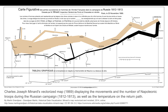Here's a very famous image that displays the movements and the number of troops that Napoleon had as he began his disastrous Russian campaign. This is a pretty interesting plot, and I recommend you take some time to look over it if you want to know some of the interesting details.